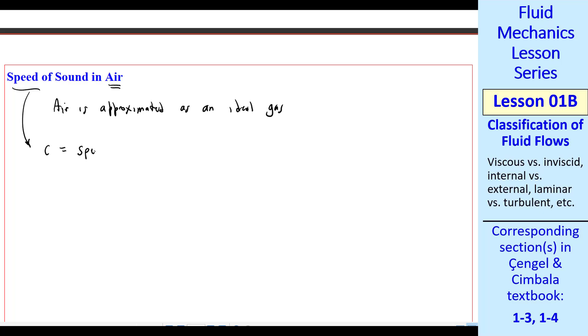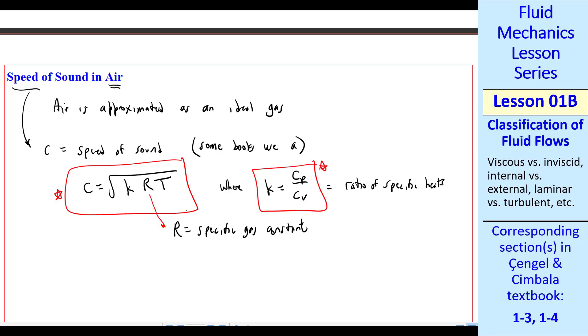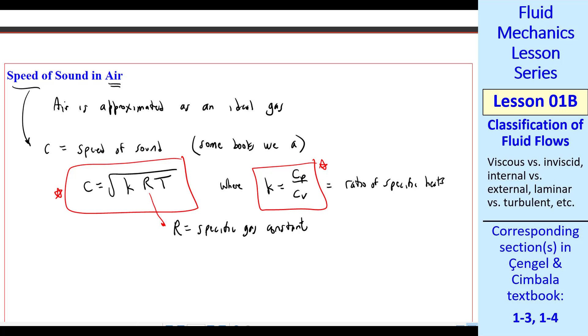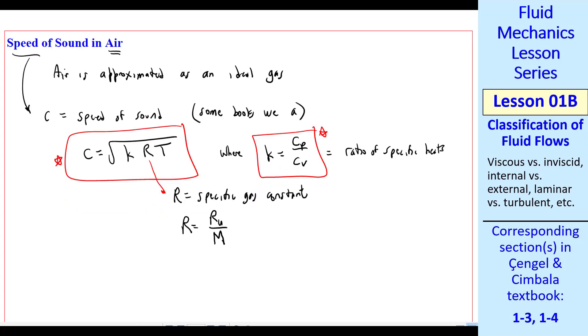When we talk about compressibility in air, air is approximated as an ideal gas. We're going to talk about the speed of sound without going through the derivation. C is the speed of sound. Some books use A instead. For an ideal gas, C is the square root of kRT, where k is the ratio of specific heats, Cp over Cv. And R is called the specific gas constant. Don't confuse R with Ru. Ru is the universal gas constant, and you divide by molecular weight to get the specific gas constant.